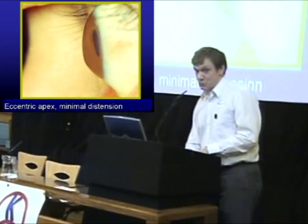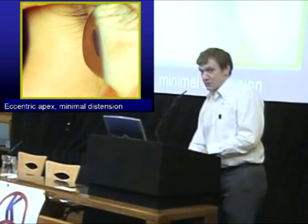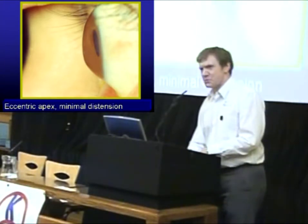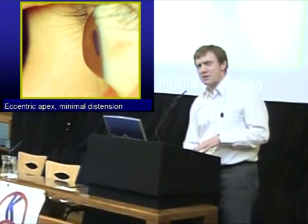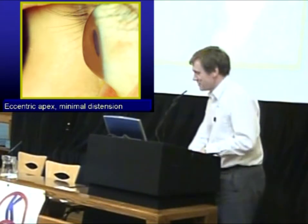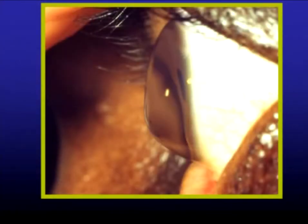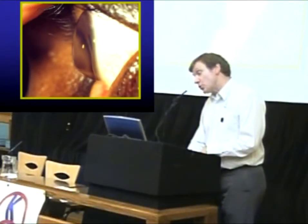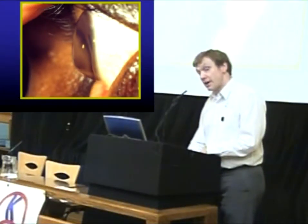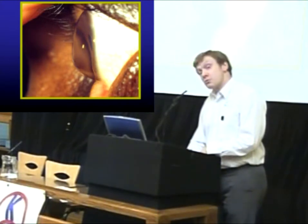It doesn't bear the slightest resemblance to a cone. John's expression this morning of a 'droopy boob' was more appropriate. Here's another one — the droopy boob type of cone, even more so in this case. Look at this central visual axis here — it's not steep at all. In fact, if you look carefully, you might agree it's actually concave on the visual axis and sloping as well. And it's this slope which sometimes causes the problem.